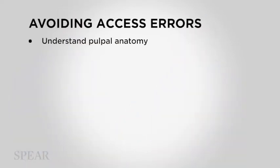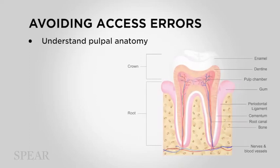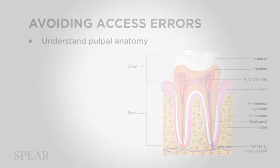How can we avoid some of these errors that we frequently find with access? The best way to avoid errors that have to do with misalignment and, in the worst case scenario, perforations is to really understand your pulpal anatomy. If you understand the pulpal anatomy, you will have a far better chance of finding this three-dimensionally abstract space in the middle of the tooth that is hidden to the eye, in a way that is most minimally invasive.